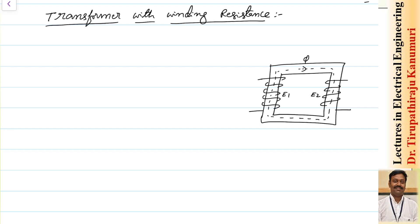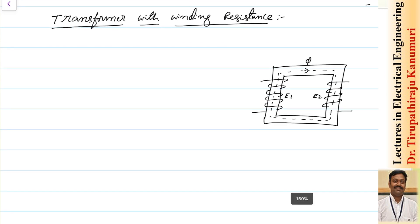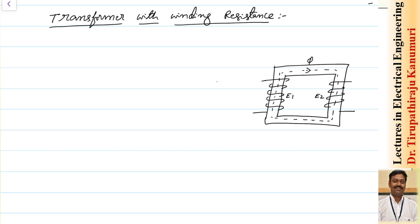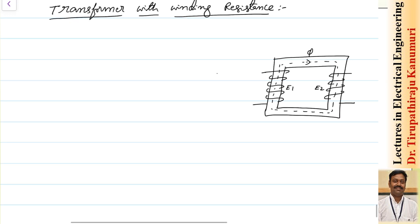We have removed the condition of the magnetizing component of current, then considered the core loss component, and in the last class we considered the effect of leakage flux. So only one assumption is remaining - the resistance of the winding. The transformer winding is made up of copper, and the copper conductor will have some resistance, which will affect how much power is transferred from the primary to the secondary side.